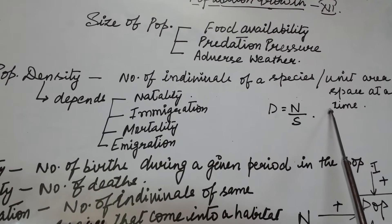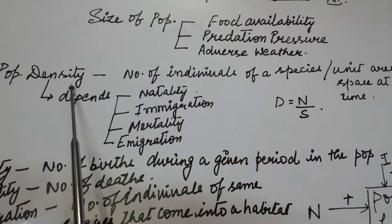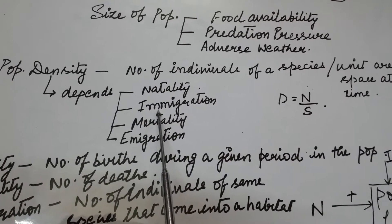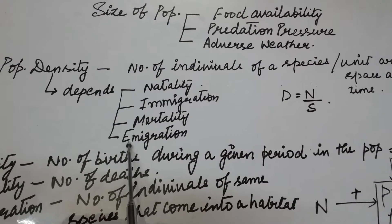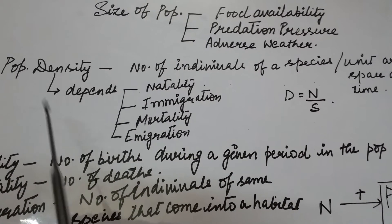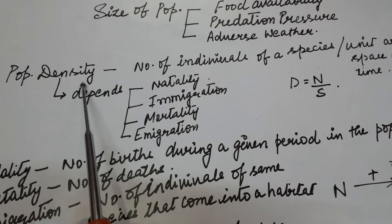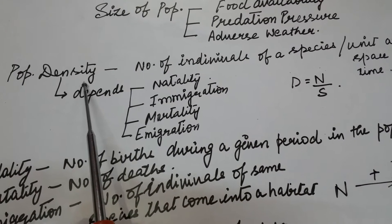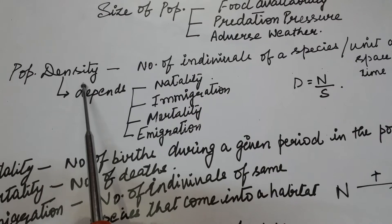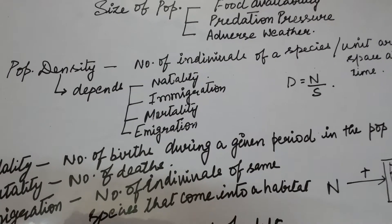There are four factors on which population density depends: natality, immigration, mortality, and emigration. These are the four factors on which the population of a particular area depends. These factors may increase the population density or may decrease the population size.